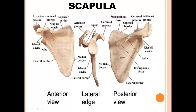This is how the scapula looks anteriorly, laterally, and posteriorly. This is the costal surface, which also contains a fossa known as the subscapular fossa. This is the superior border, supraspinous fossa, infraspinous fossa, medial border, lateral border, and this is the glenoid cavity, acromion process, coracoid process, and lastly the spinous process.